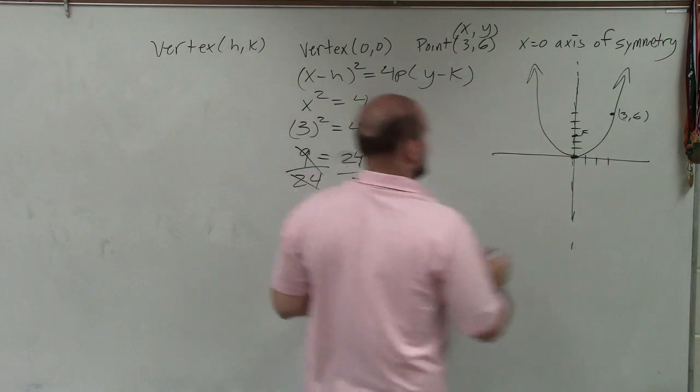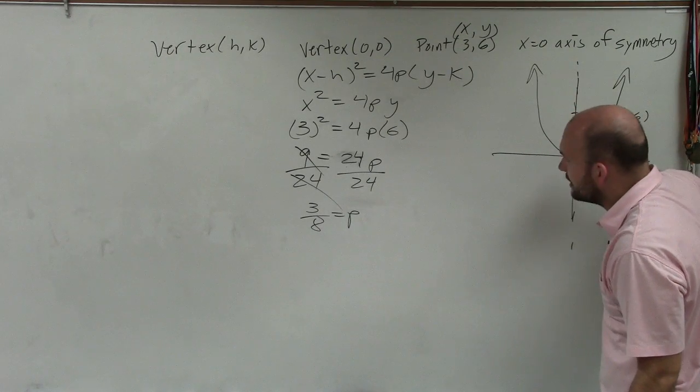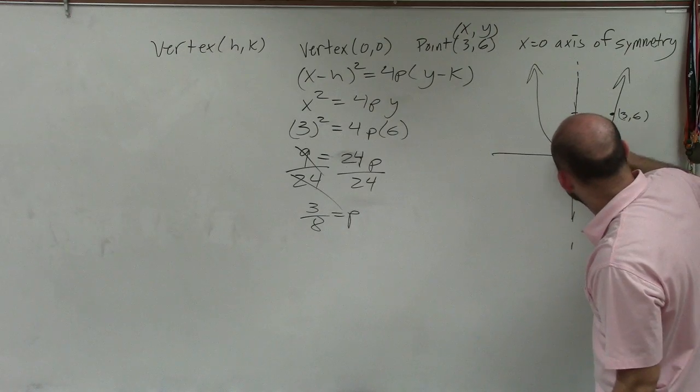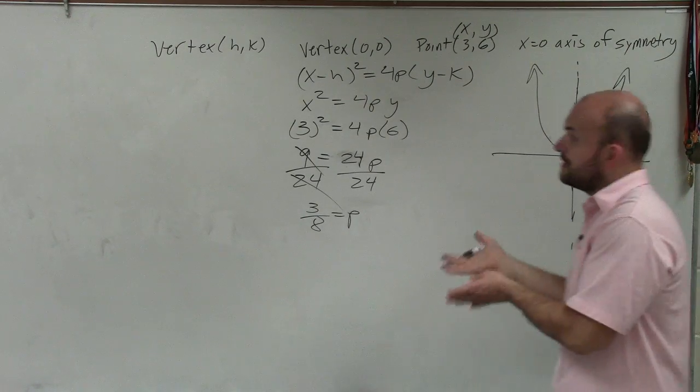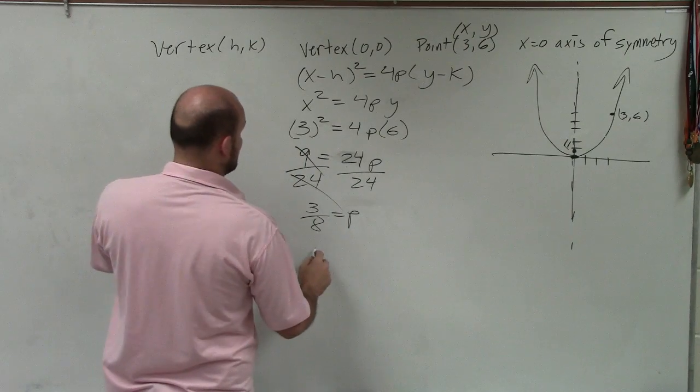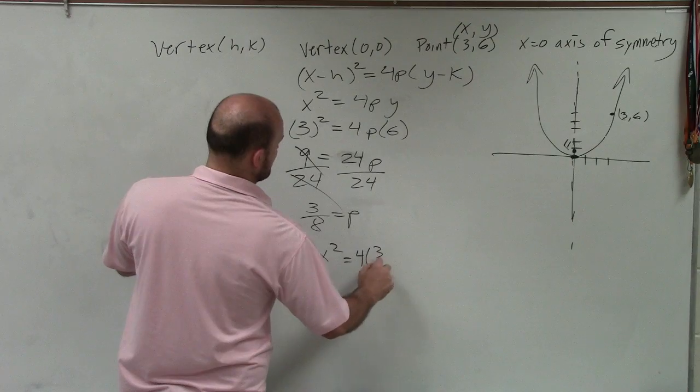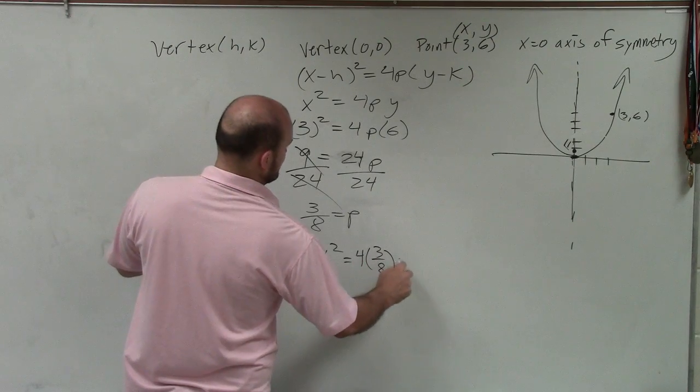So therefore it's actually not even close, but my focus is actually right around there, not even halfway. That's going to be my focus. So now that I know my focus, I can plug in my focus back into my equation, which I have is x squared equals 4 times 3/8 times y.